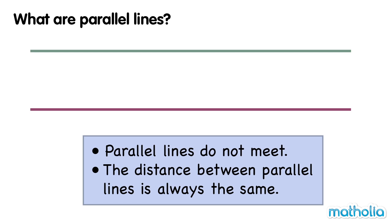These lines are parallel lines. To show that lines are parallel, we draw a small arrow on each line.